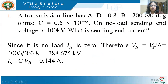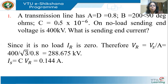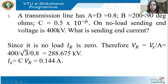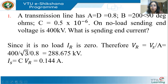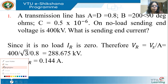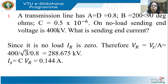The first problem: a transmission line has A equal to D equal to 0.8, B equal to 200 at an angle of 90 degrees, and C equal to 0.5 into 10 to the power of minus 6. The unit of C is Mhos and the unit of B is Ohms. On no load, the sending end voltage is 400 kV. What is the sending end current?